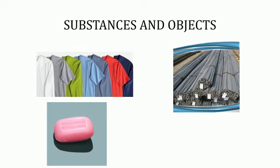Objects have a specific shape and their parts have a proper arrangement which helps us to identify them. We use wood, plastic, or steel to make a table, chair, or cupboard. These substances have the strength required to make these articles, and they can be given any desired shape.